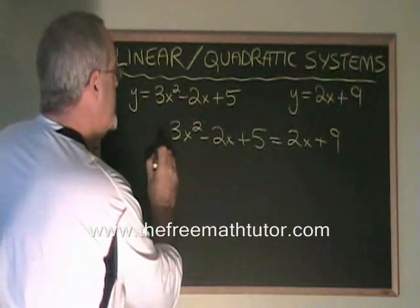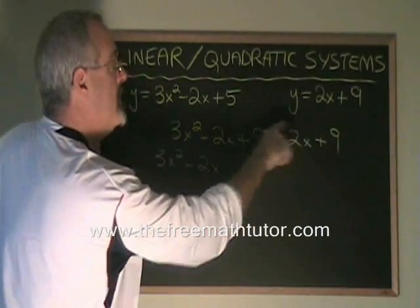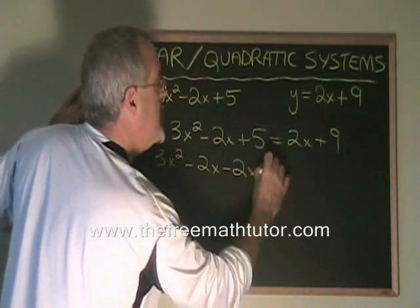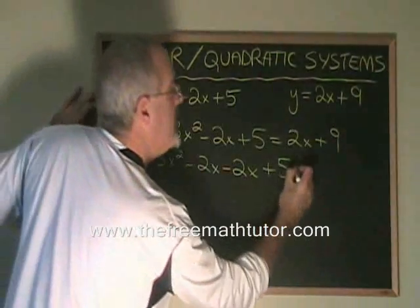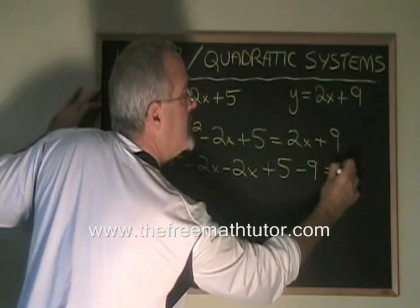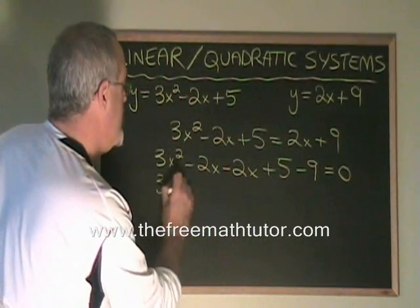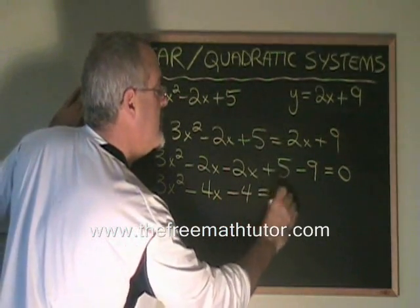Simplifying this, I get 3x squared minus 2x. If I move this 2x to the other side, I have another minus 2x plus 5. And if I move the 9 to the other side, minus 9 equals 0. Simplifying this, 3x squared minus 4x minus 4 equals 0.